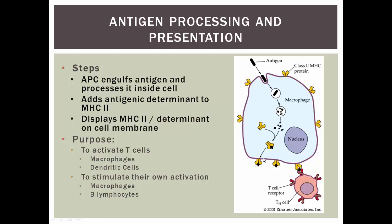The macrophage then goes up to a helper T cell — acting like a scout, saying, 'Hey general, look what I found.' The helper T cell in response to that will become activated. So the whole idea of antigen processing cells is to activate T cells. Both macrophages and dendritic cells will activate helper T cells and get them to do their job.